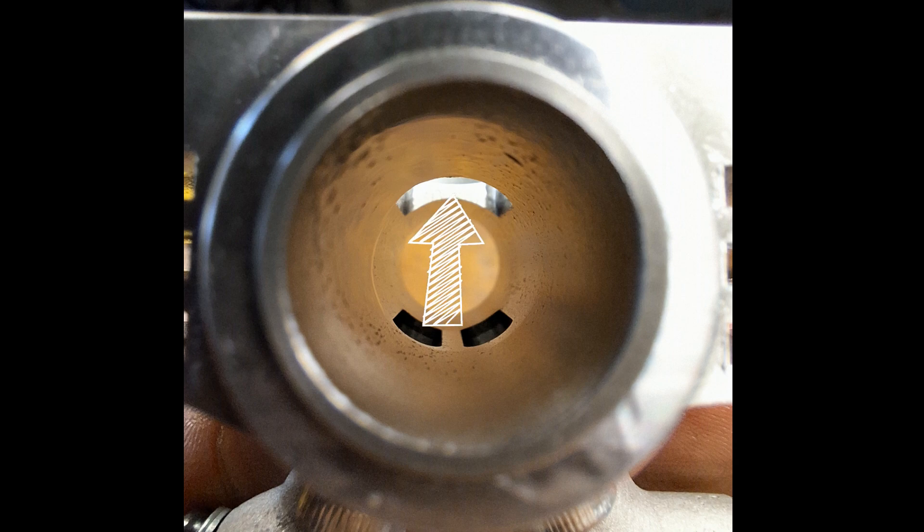Here you can see the valve opening into the combustion chamber. This is the outlet opening and this is the inlet opening.